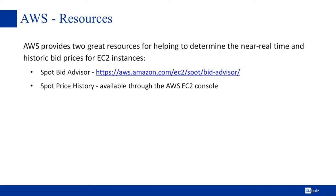There are two great resources for helping determine near real-time and historic bid prices for EC2 instances, both provided by AWS. The first is the Spot Bid Advisor, available via the link on the current slide. The second is the Spot Price History, available inside the AWS EC2 console. Both of these resources are provided by AWS to help you in the decision-making process around bidding for these discounted instances.